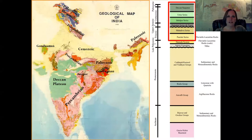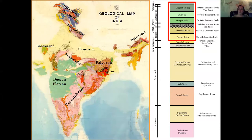This is a generalized geologic map of India and then a generalized stratigraphic column of India that I put together. What we're going to talk about today is in the red box. If you look at the map, the majority of that green stuff is all basalt associated with the Deccan Traps. You can see it's a pretty big area of India.